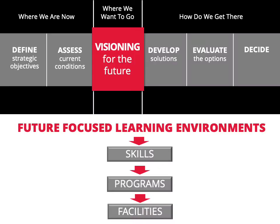As introduced in episode one, this master planning process is broken into three distinct phases. This video will review where we want to go, where we define a vision for the future and imagine what is possible. We are going to explore the basis of successful future-focused learning environments, beginning with understanding the needed skills to be successful in our ever-changing world. Next, we will discuss programs and opportunities to best develop and refine those skills, and lastly, how facilities can support these programs to ensure students are given the best educational opportunities.